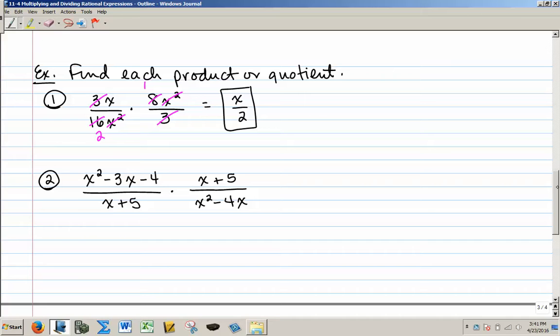For my second example here, I can't start canceling yet, because I have a lot of pluses and minuses, and I need to do some factoring. You might want to cancel this x squared with that x squared, and this 5 with that 5, but you can't do that. We have to factor this first. So let's take a look at this x squared minus 3x minus 4. That's a polynomial, a trinomial, so we need to factor that into two numbers that multiply to negative 4 and add to a negative 3. So that's going to be an x minus 4 and an x plus 1.